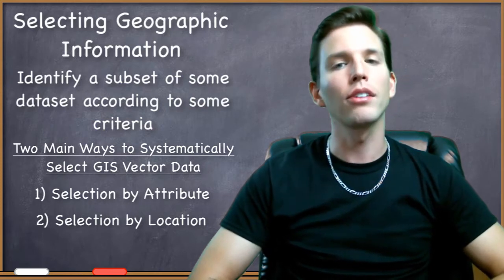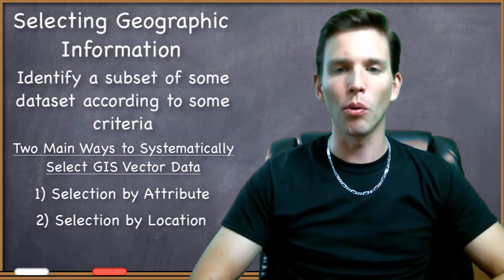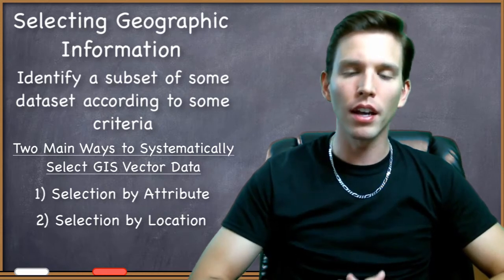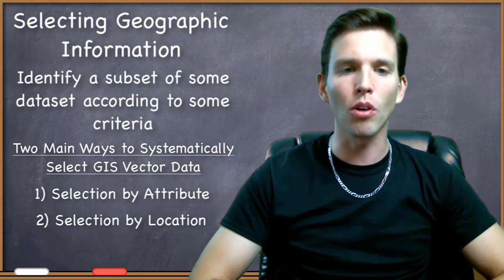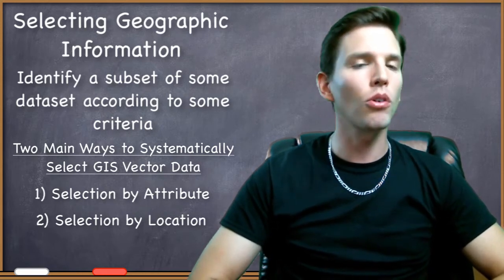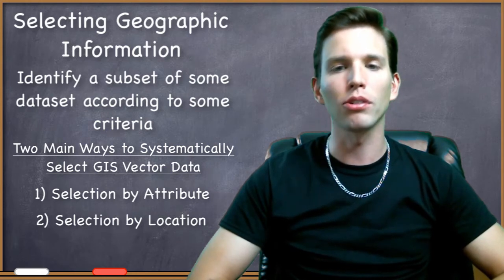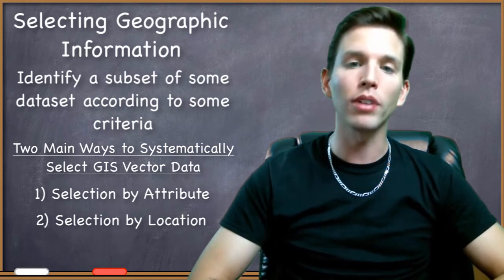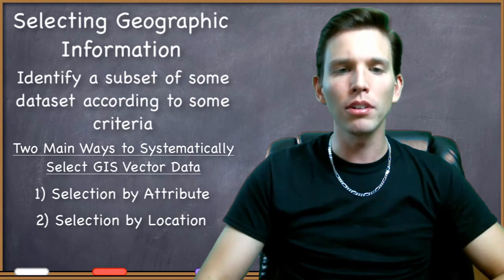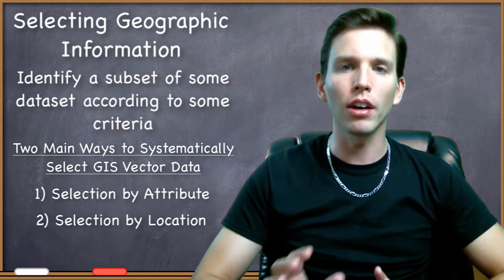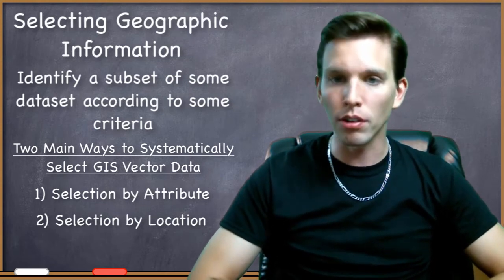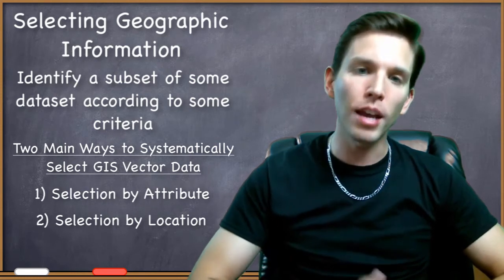There are many GIS problems that can be solved and many GIS questions that can be answered simply by the application of selection by attributes and selection by location in the correct order. Even here in these two components of the core GIS toolkit, you're going to get the capability to answer lots of questions and solve lots of problems.